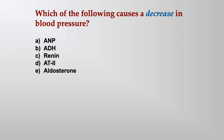Review question: which of the following causes a decrease in blood pressure — ANP, ADH, renin, AT2, or aldosterone? Four of those cause an increase in blood pressure; one causes a decrease. The answer is ANP. Make sure to create a big table or chart with all the adrenergic receptors, the renin-angiotensin-aldosterone system, ANP, and all four factors affecting peripheral vascular resistance: blood vessel diameter, blood vessel length, blood viscosity, and turbulent flow.